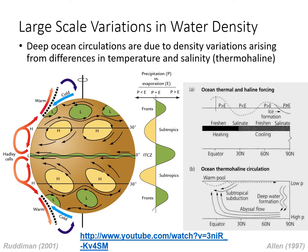This slide shows how ocean temperature and salinity are related to our three-cell model. In the panel in the middle, precipitation is P and evaporation is E. When precipitation is less than evaporation, salinity increases. And when precipitation is greater than evaporation, salinity decreases. When salinity increases, the density of water increases and sinks. Colder water is also denser than warm water, and colder water will also sink.